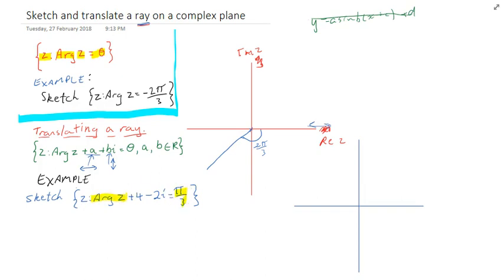this bit here and this bit, and just lightly draw it as you normally would. So arg z pi on 3 is going to start here and go up to here. That's what a ray arg z pi on 3 would look like. That angle is pi on 3.